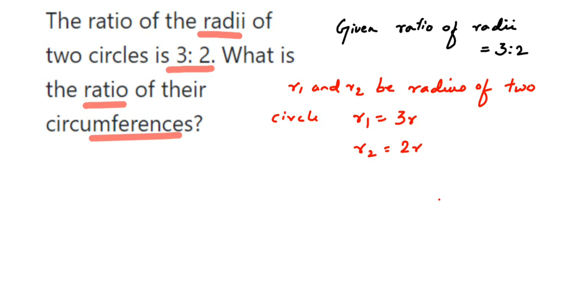You can take it as 3x and 2x also, no issue, we just have to take any variable. So here I've taken r, you can take x, y, a, b, anything. And if r1 and r2 are the radius then r1 will be 3r and r2 will be 2r because the ratio is 3 is to 2.